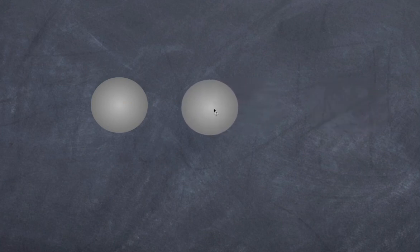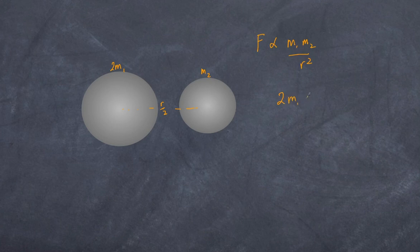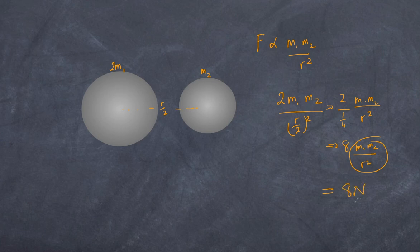Now let's make the distance half but also increase the mass. So we have a distance of r over 2, and we make this 2m1 and still one m2. The force is proportional to m1 m2 over r squared. Now I have 2m1, still m2, and on the bottom I have r over 2 all squared. That becomes 2m1 m2 over one quarter, and we get 8 m1 m2 over r squared. So considering that we made this value 1 newton, I now have an 8 newton force between the two.